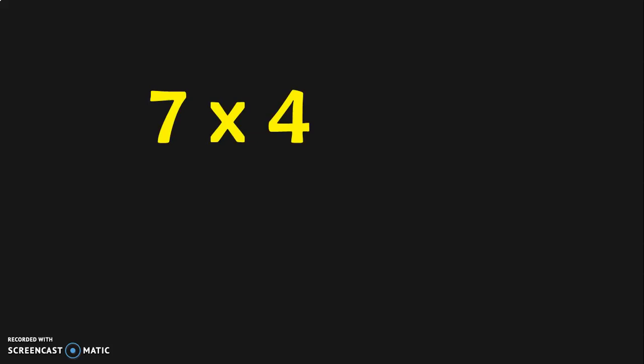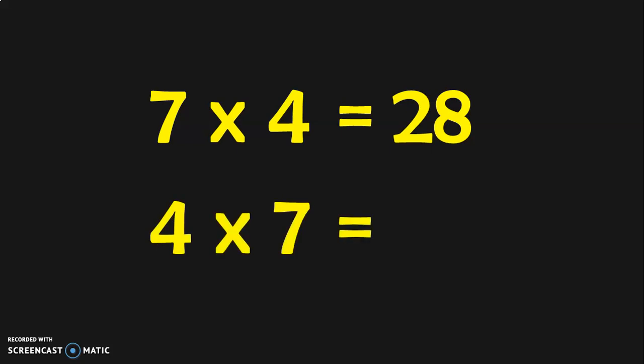The first example is 7 into 4. We know the 7 tables — 7 fours are 28. That is, we have 7 groups of 4 items each, so 7 times 4 is equal to 28. What is 4 into 7? From the 4 tables, we know that 4 sevens are also 28. That is, we have 4 groups of 7 items each.